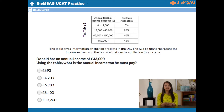This sounds complicated, so let's go through this question together and hopefully all will become clear. Your first job is to identify which category Donald's earning of £33,000 a year puts him in. For this tax table, we can see that he is in the £12,000 to £45,000 category or bracket. This means that he will have to pay 20% tax on his income over the lower limit of the bracket, which is £12,000.